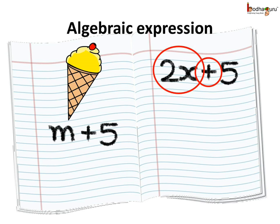Same way, another example, 2x plus 5. Here, x and 2 are connected by the multiplication operator.